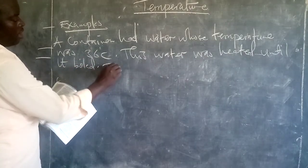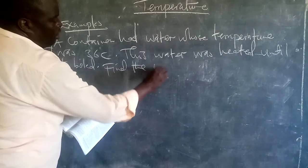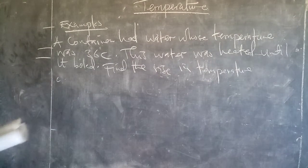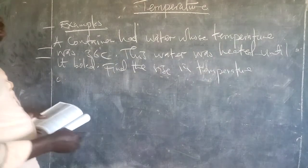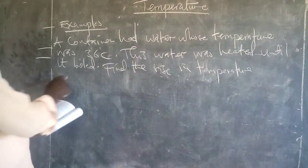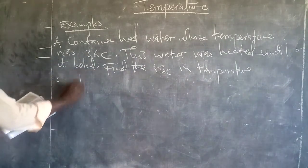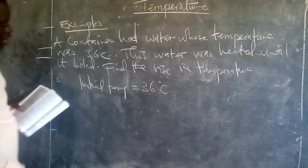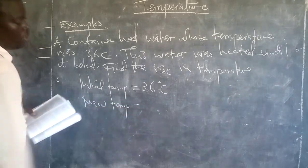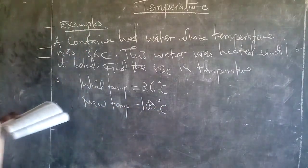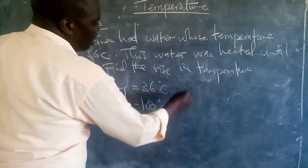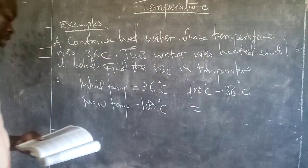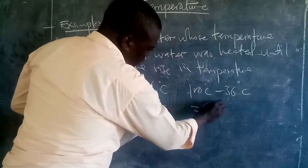The question is: find the rise in temperature. So we have the boiling point, which is 100 degrees Celsius, and the initial temperature was 36 degrees Celsius. So the rise in temperature is 100 minus 36, which gives us 64 degrees Celsius.